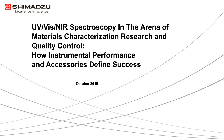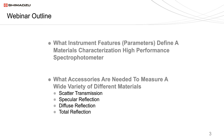Thank you for that introduction and welcome to Shimadzu's webcast on UV visible near infrared spectroscopy that addresses the materials characterization market. This webcast will consist of two parts. The first part will deal with instrumental features or parameters necessary for measurements in the materials characterization market, which requires a high performance spectrophotometer. The second part will deal with the accessories needed to measure the variety of samples that present themselves, including scatter transmission measurements, specular, diffuse, and total reflectance measurements.